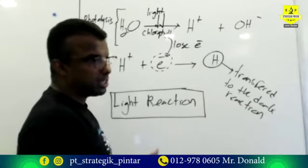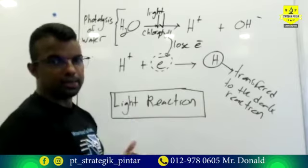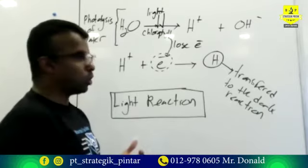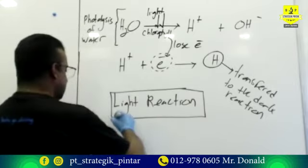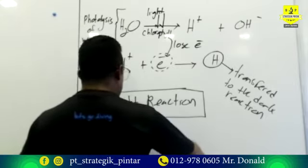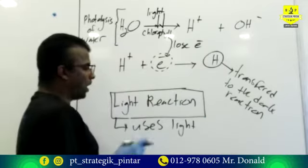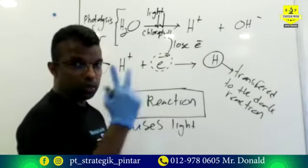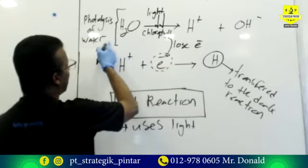The photosynthesis process is divided into light reaction and dark reaction. Light reaction is known as light reaction because it uses light. What is the importance of using light? Two importances. Number one: light will be absorbed by the chlorophyll.